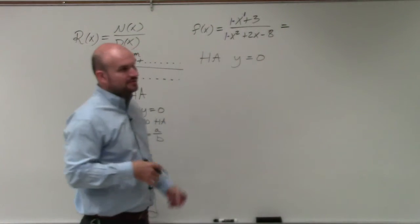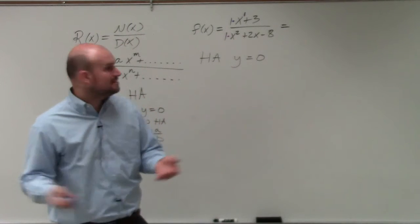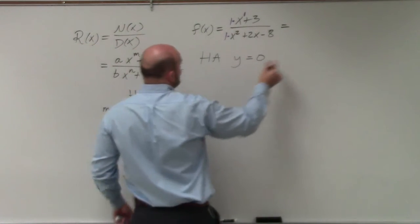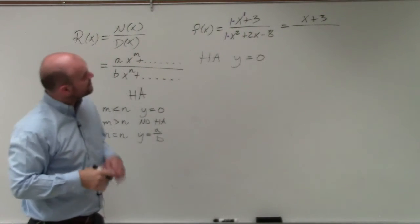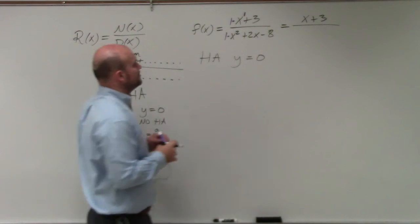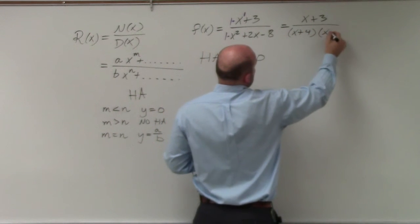The first thing we always want to do with rational expressions is simplify. We can factor the denominator - we have x plus 3 in the numerator. To factor the denominator, what two numbers multiply to give you negative 8 and add to give you positive 2? That leaves me with (x + 4)(x - 2).